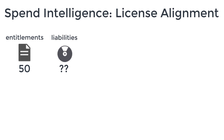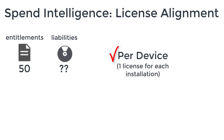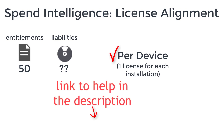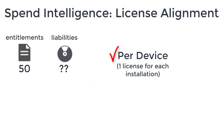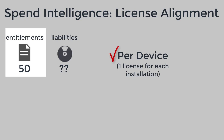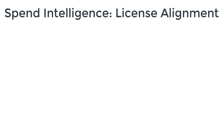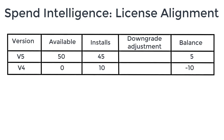Here we are concerning ourselves only with products that use a per device metric or similar, where a separate license is needed for each installation. Again, the help gives you more detail on how to do this; in this video we're just going to concentrate on the concepts of comparing our available licenses — our entitlements — with what we have installed — our liabilities. The comparison data grid has different columns so that we can see our available licenses, installs, and balance for each version.